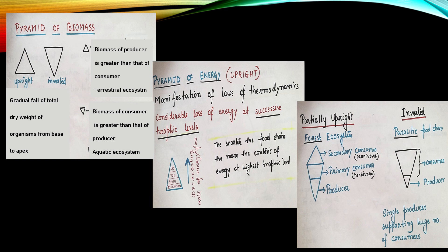An inverted one is seen in parasitic food chain. Here the producer is pretty less in comparison to that of the consumer. Here the single producer supports huge number of consumer.